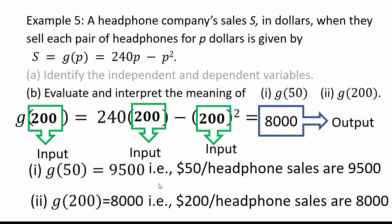What does that mean? That means if I set my price $200 per headphone, I have sales of 8000. You should always try and see if it makes sense to you. What is happening here? If the price is lower, you sold more headphones than if the price was 200.